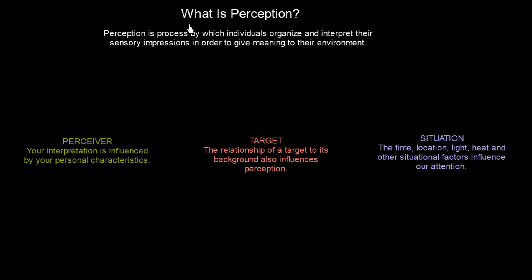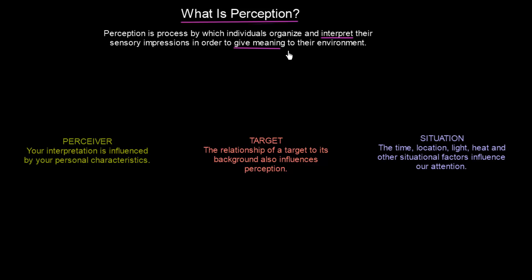What is perception? Let's think about what it means when we have some perceptions and why it is relevant to study while we are studying organizational behavior. Let's take a look at the definition of perception. Perception is a process by which individuals organize and interpret their sensory impressions in order to give meaning to their environment.